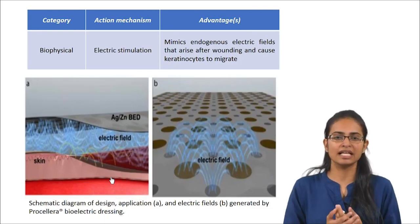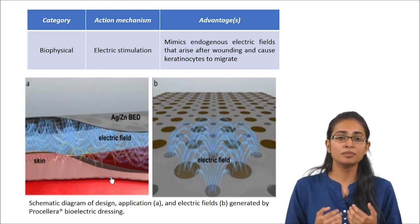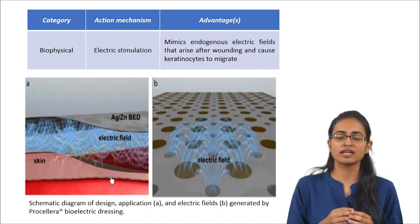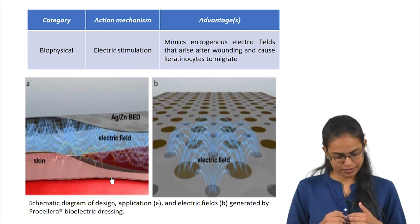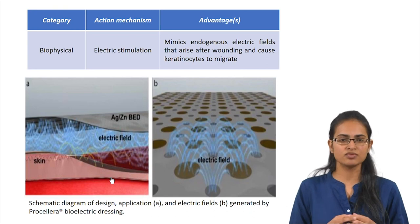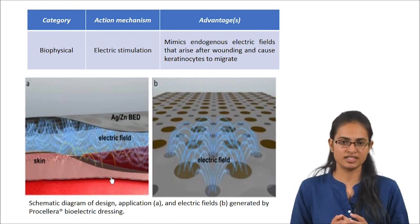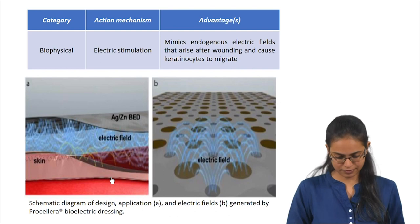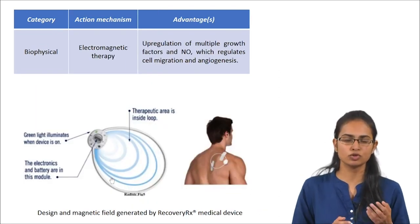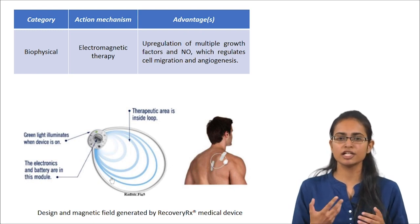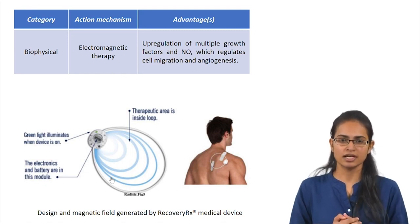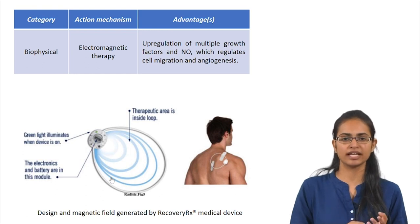Electric stimulation is another biophysical signal used as a biomimicry tool — it mimics the endogenous electric fields that arise after wounding and cause keratinocyte migration. Procellera is one such bioelectric dressing, producing microcurrents of 2 to 10 microamperes similar to physiological electric fields. Electromagnetic therapy has also been used as a biophysical signal, resulting in upregulation of multiple growth factors including nitric oxide, which is important for angiogenesis, and has also been shown to regulate cellular migration.